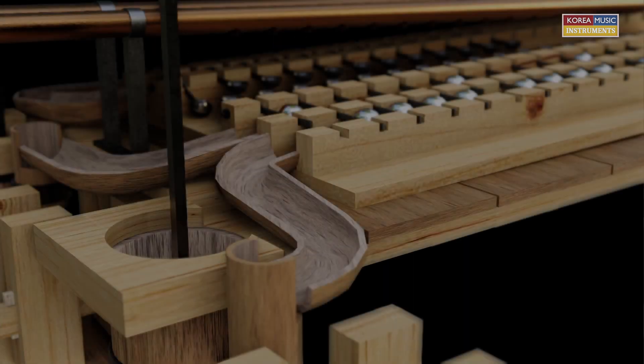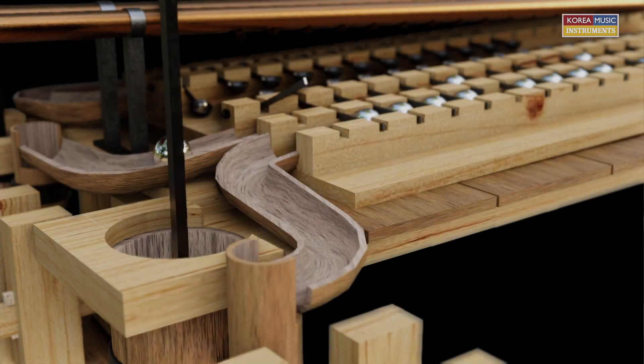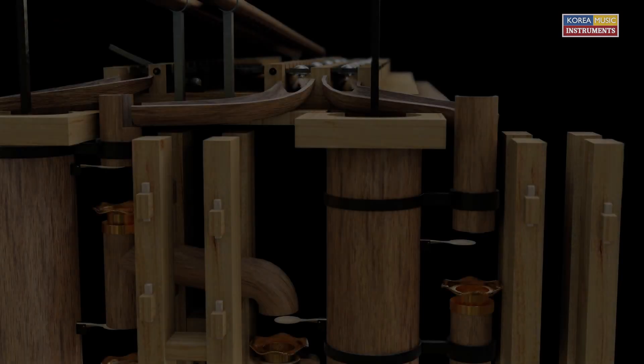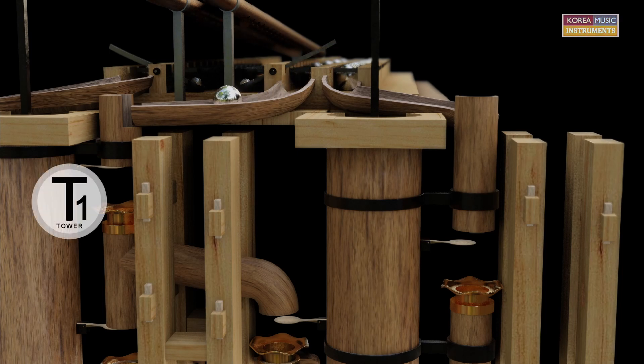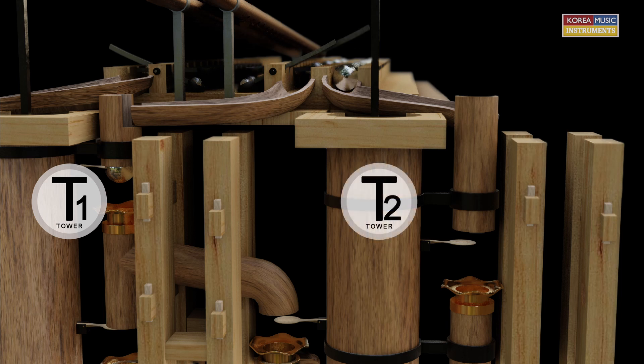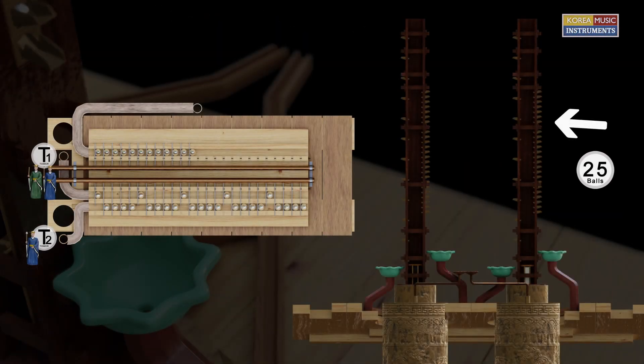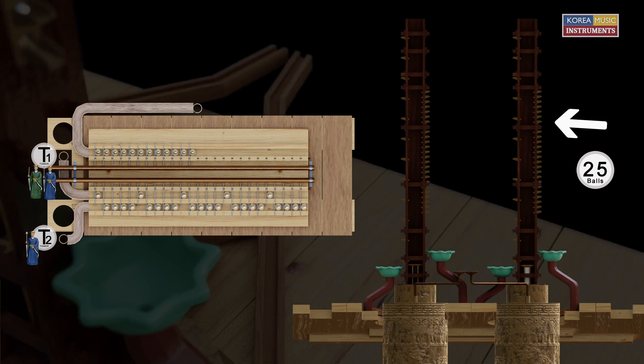The power converter activates two mechanism systems in Module 5. Module 3 is connected twice with Module 5. One ball track leads to Tower 1 and the other ball track leads to Tower 2. The 25 balls of the power converter are activated by the 25 balls of Module 2.